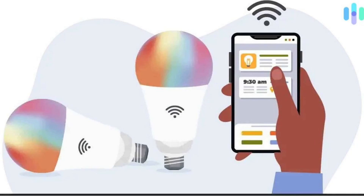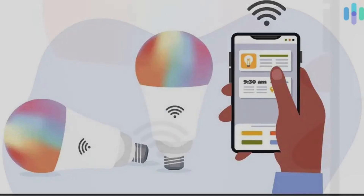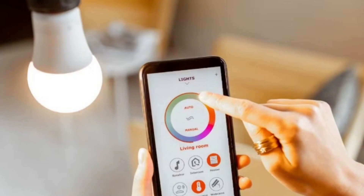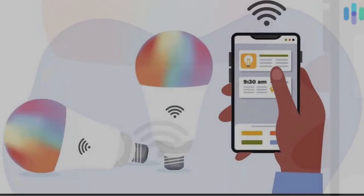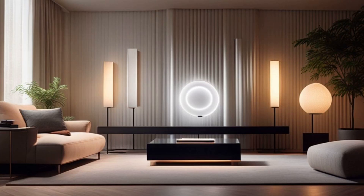Tap Remove from the options that appear. 5. Tap Done to save the changes. Deleting Light Groups: 1. Open the Google Home app. 2. Tap and hold the light group you want to delete. 3. Tap Delete Group from the options that appear. 4. Tap Delete to confirm the deletion.